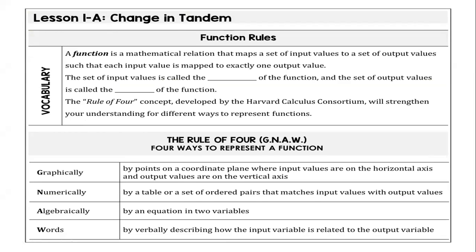Starting off with the definition of a function, to summarize it, a function is a relationship between an input and an output. The set of input values is called the domain. So in this blank, we're going to write domain. So domain of the function and a set of output values is called the range of the function.